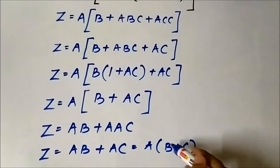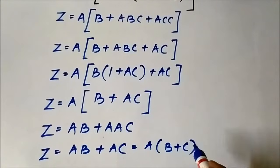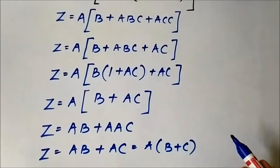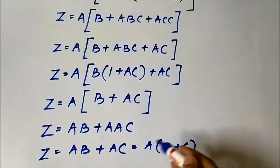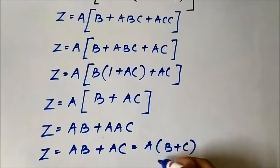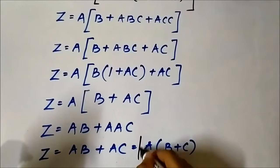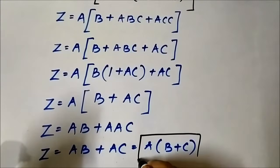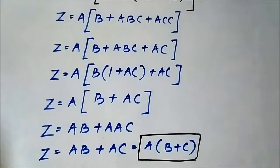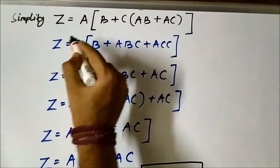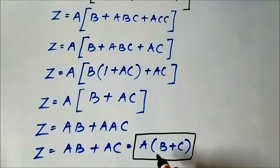So z equals a·b plus a·c, or we can write it as a·(b plus c). I repeat: when I use plus it means OR operation, and when I say into or multiplication it means the AND operation. This is the final simplified Boolean expression a·(b + c).